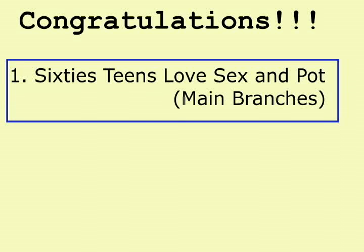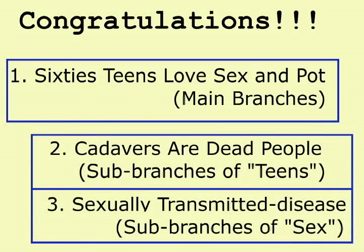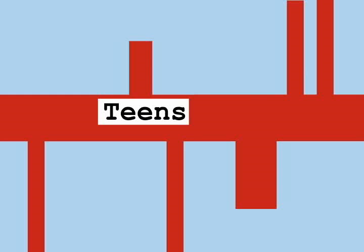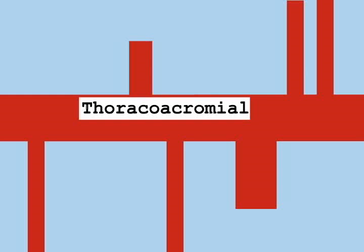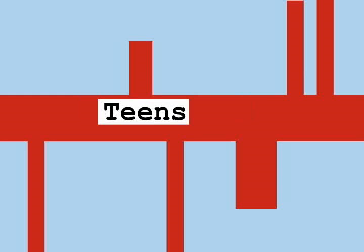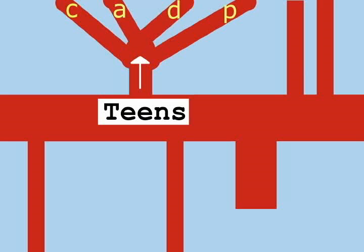You now know the main branches, so we will next look at the sub-branches. If you remember the mnemonic 'teens grow up and die,' you will know that teens — the Thoracoacromial Trunk — goes up, flows towards the head, and dies, or has four sub-branches.